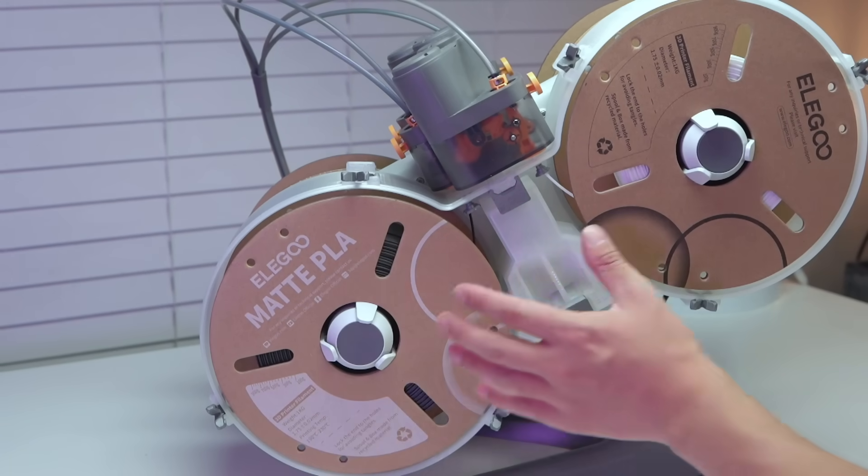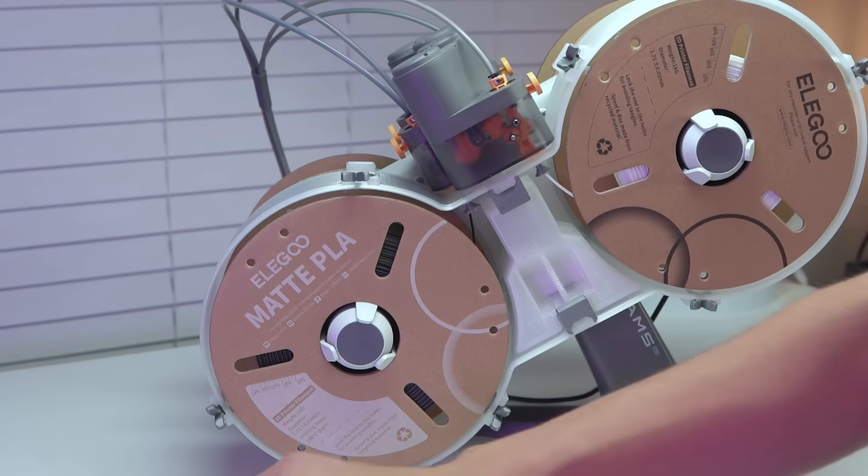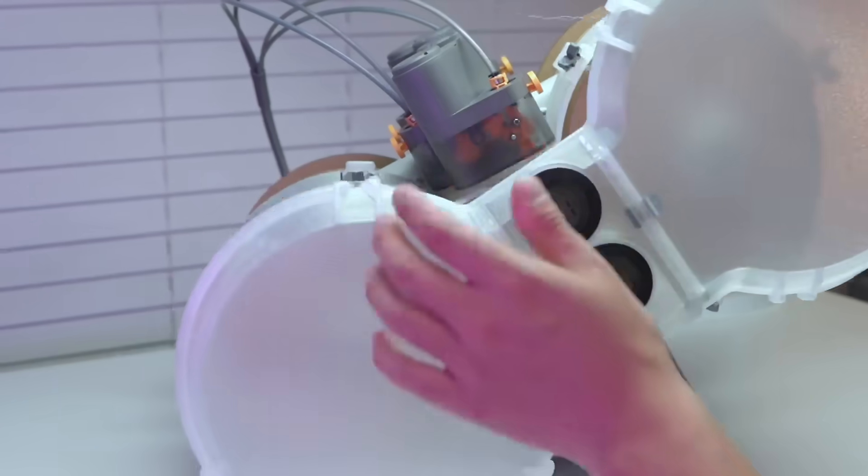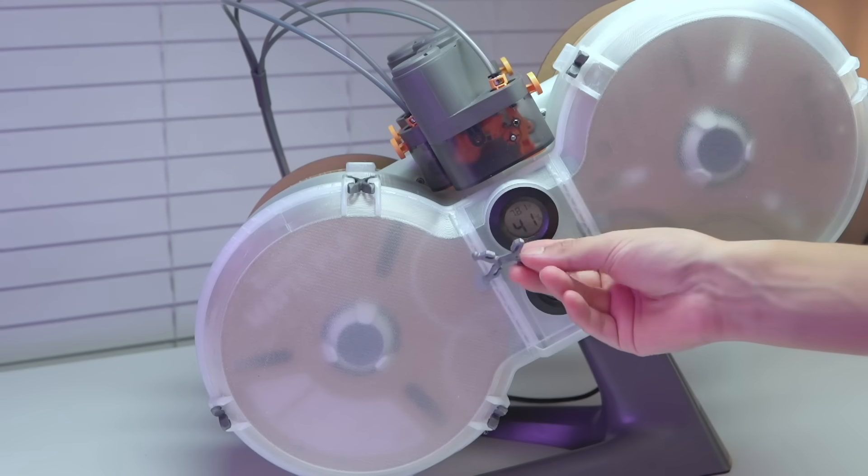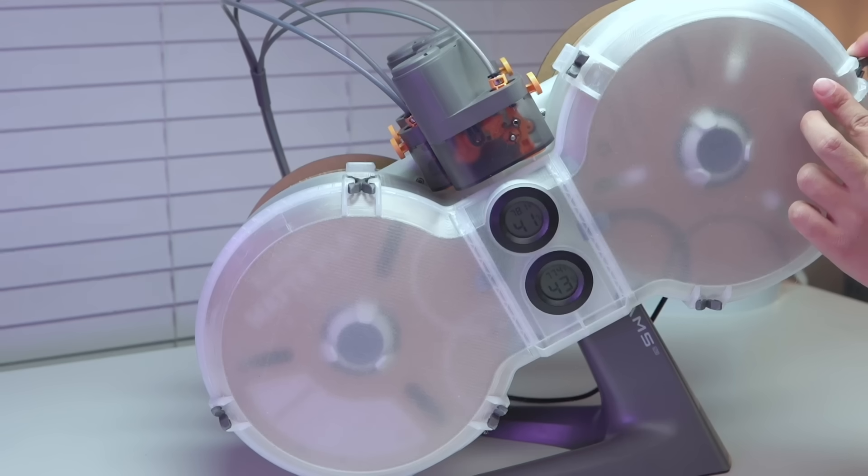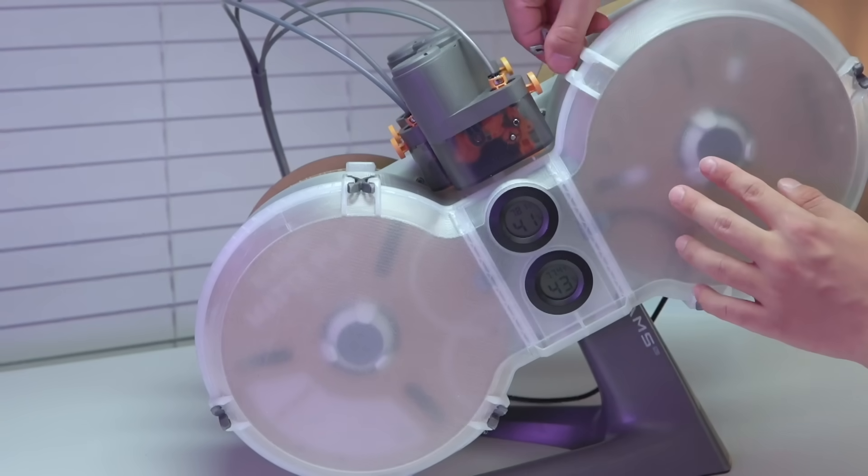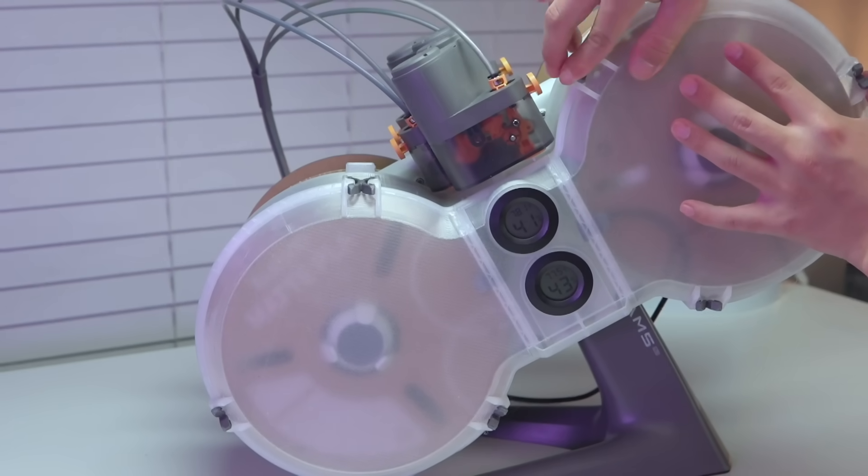Now we have both of our filament rolls installed in there. We have our desiccants all ready to go. All that's left, put on our cover. It looks like some of these clips were upside down and you can tell because they just don't go down all the way. Simple solution. Take them out, flip them over. Good to go.